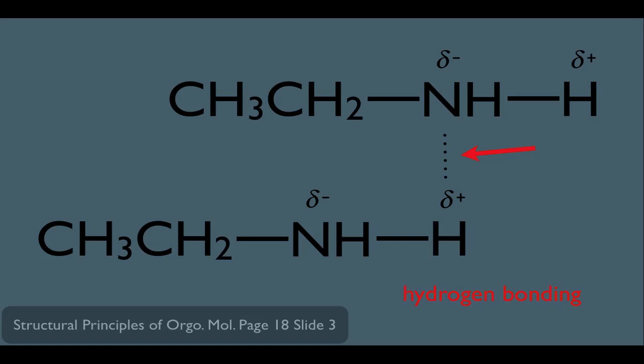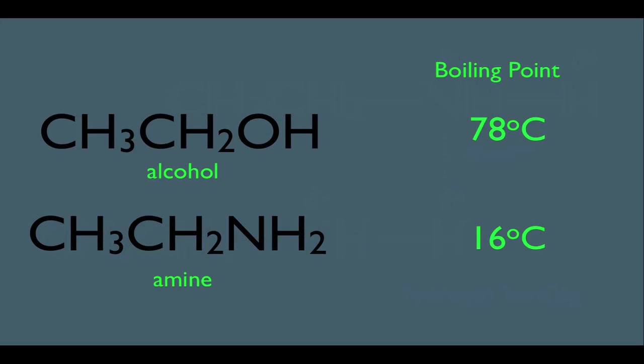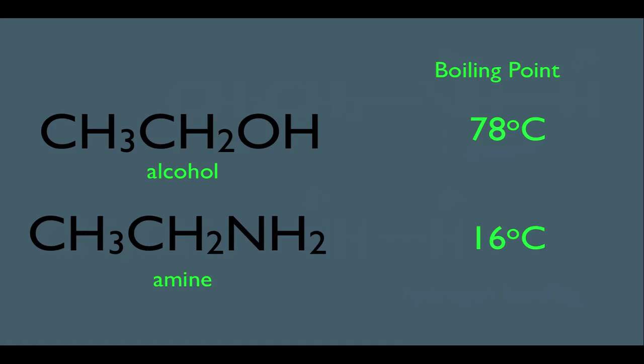However, this attraction is not as strong as what we observe in alcohols. Comparing the boiling points of two molecules with the same number of carbons — one with oxygen (alcohol) and one with nitrogen (amine) — notice it's the alcohol that has a higher boiling point. That's because hydrogen bonding in alcohols is stronger than in amines. This makes sense: oxygen is more electronegative than nitrogen, so oxygen has a greater partial negative charge, meaning two alcohols side by side are held together more strongly than two amines.